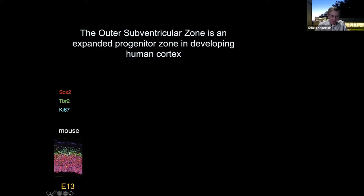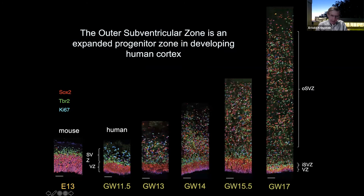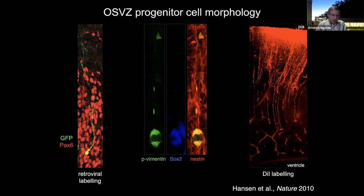These form the ventricular and subventricular zones. Early human cortical development looks very much the same, with radial glial and intermediate progenitors arranged very similarly. But then in the subsequent weeks, the outer subventricular zone forms in the human brain — a structure not found in rodents. This is an enormously expanded subventricular zone, and toward the end of neurogenesis it becomes the primary focus of neurogenesis, while the ventricular zone becomes much smaller.